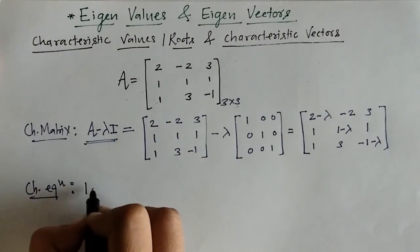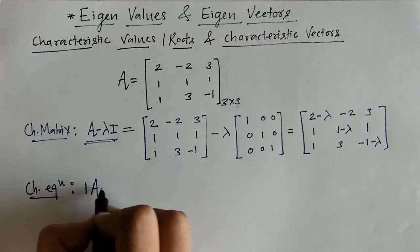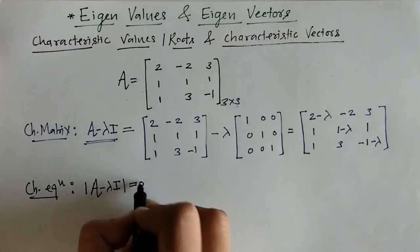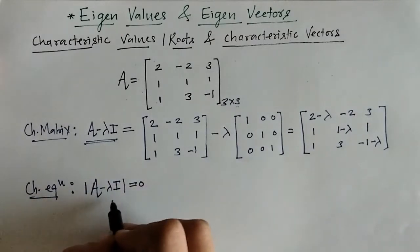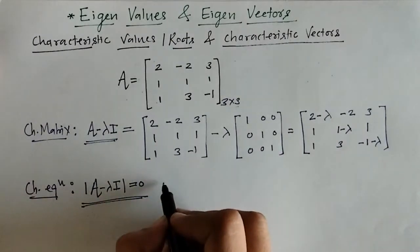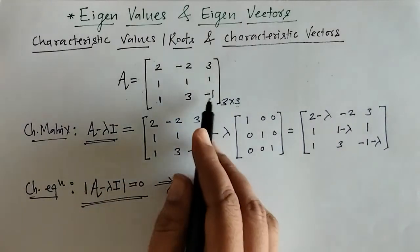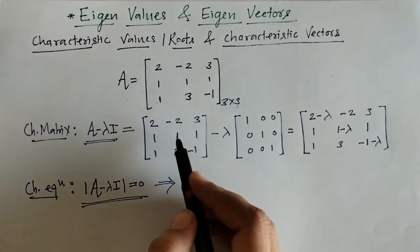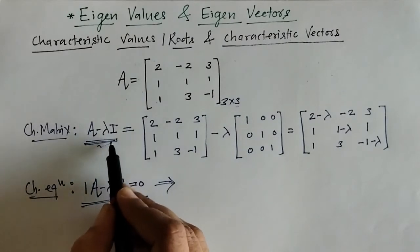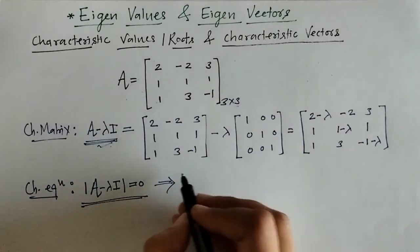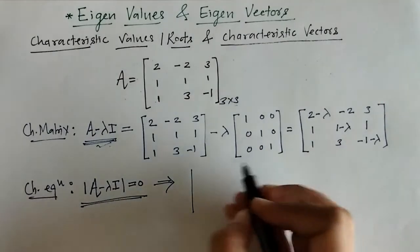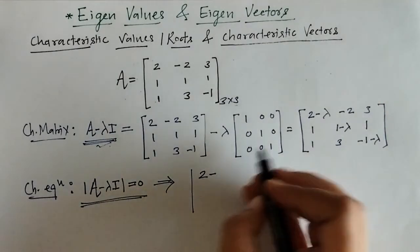The characteristic equation is given by the determinant of A minus lambda I equals zero. So for this matrix, the characteristic equation is given by the determinant of this matrix A minus lambda I equals zero, and we will write down this determinant equal to zero.